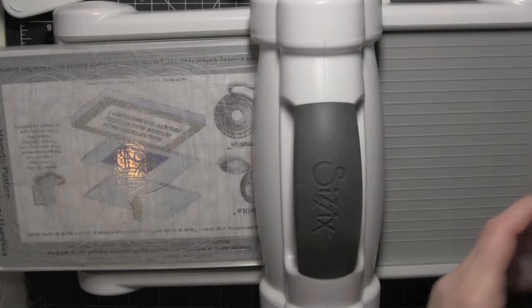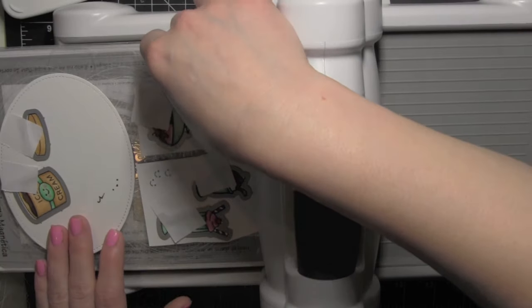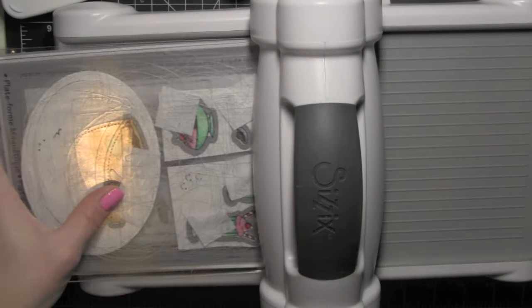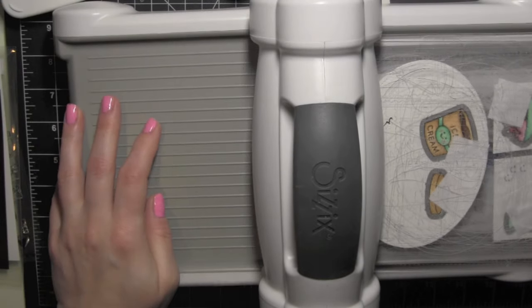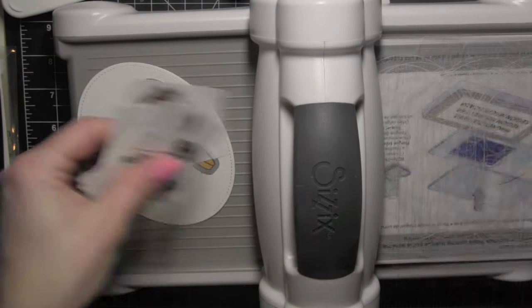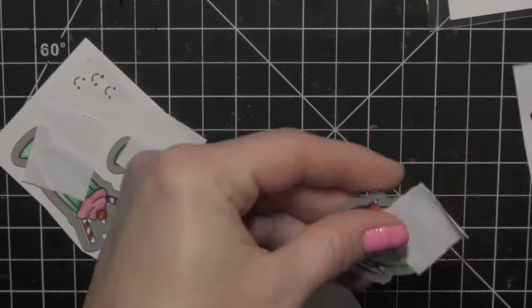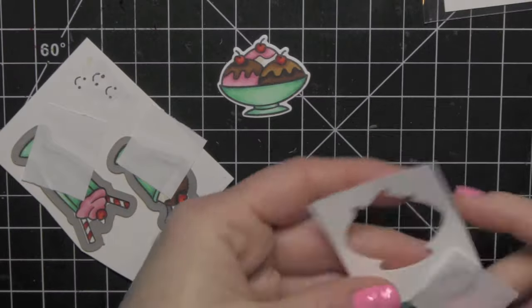Once all of these images are colored I'm going to use the coordinating dies and use a little post-it tape to hold them in place and run them through my Sizzix Big Shot. I can pop all of those out now and I have all of the elements for my ice cream shop window.